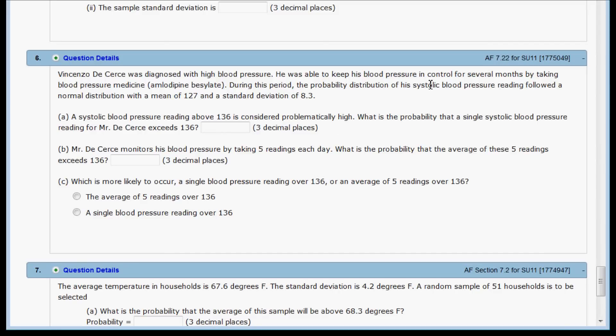In question 6 we're looking at systolic blood pressure readings. We're told that they follow a normal distribution with a mean of 127 and a standard deviation of 8.3.